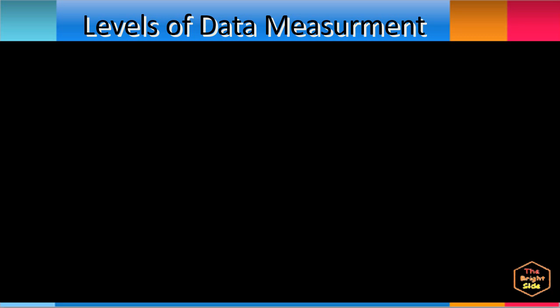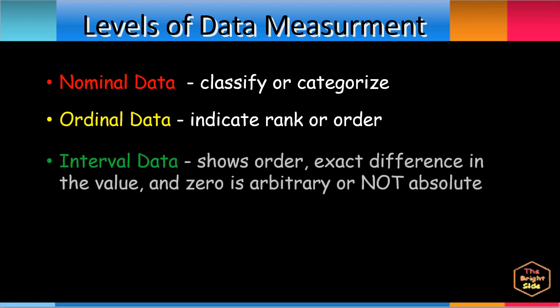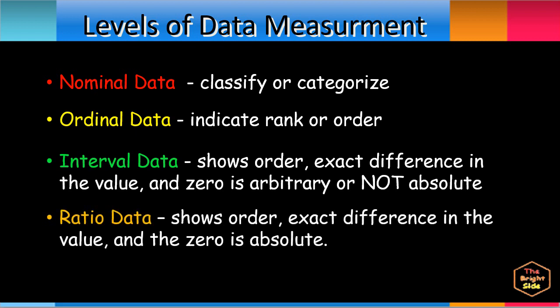To summarize: nominal data numbers classify or categorize; ordinal data numbers indicate rank or order; interval data shows order, exact difference in the value, and zero is arbitrary or not absolute; ratio data shows order, exact difference in the value, and the zero is absolute.